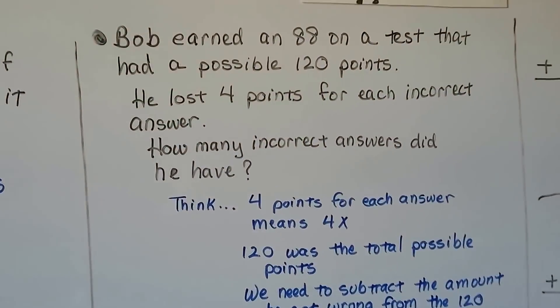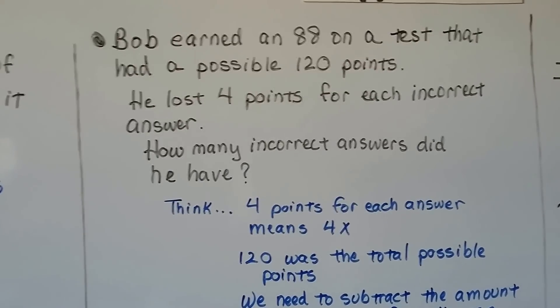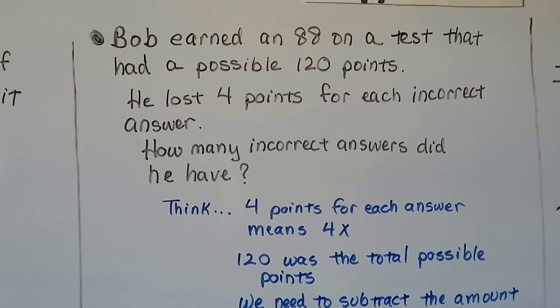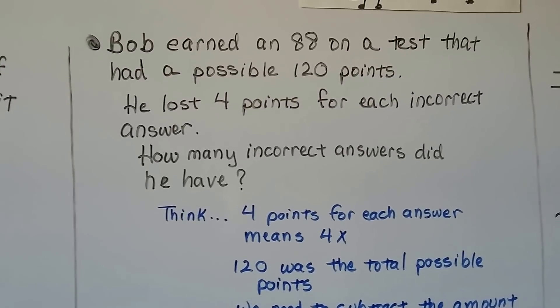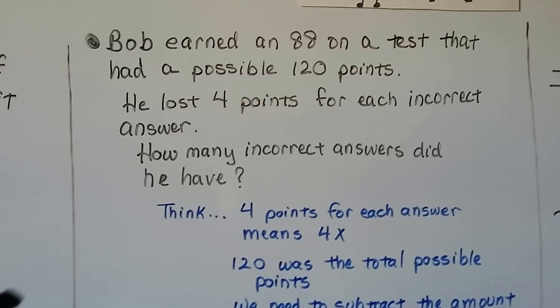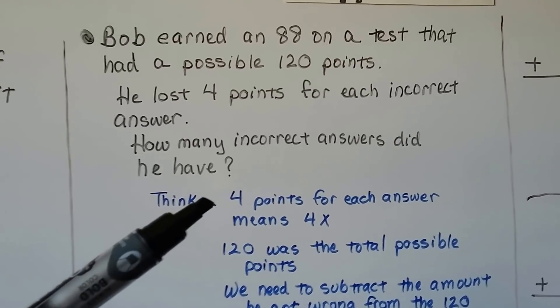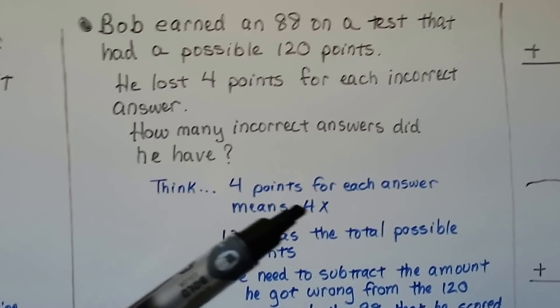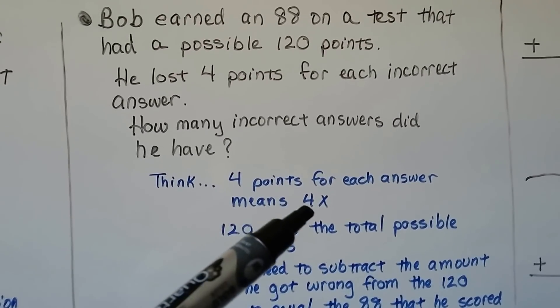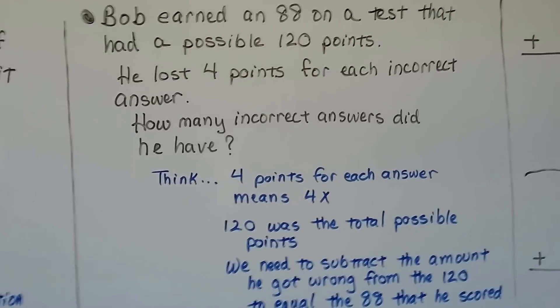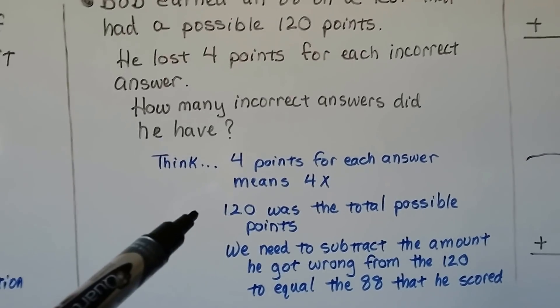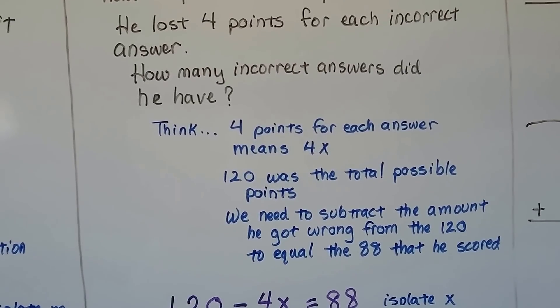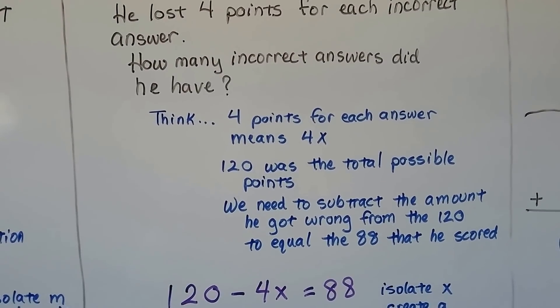Bob earned an 88 on a test that had a possible 120 points. He lost 4 points for each incorrect answer. How many incorrect answers did he have? There's 4 points for each answer. That means we're going to do 4x. If he had 2 wrong, it would be 4 times 2. 120 was the total possible points. We need to subtract the amount he got wrong from the 120 to equal the 88 that he scored.